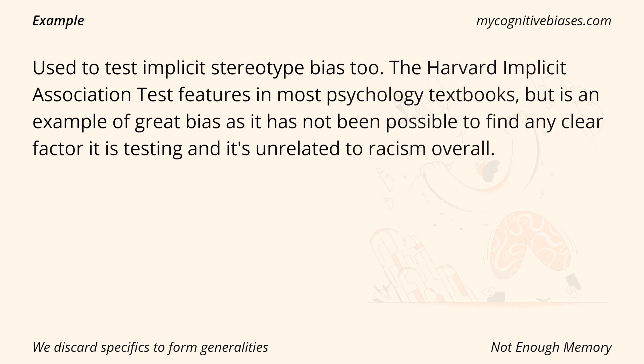Example: it is used to test implicit stereotype bias. The Harvard Implicit Association Test features in most psychology textbooks, but it is an example of great bias, as it has not been possible to find any clear factor it is testing, and it is unrelated to racism overall.